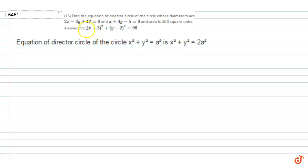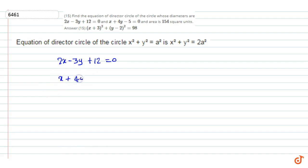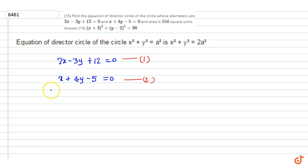Here, we are given the diameters of the circle. The diameters are given by 2x minus 3y plus 12 equal to 0 (equation 1) and x plus 4y minus 5 equal to 0 (equation 2). The point of intersection of the diameters will be the center of the circle. So, to get the center of the circle, we solve these two equations.